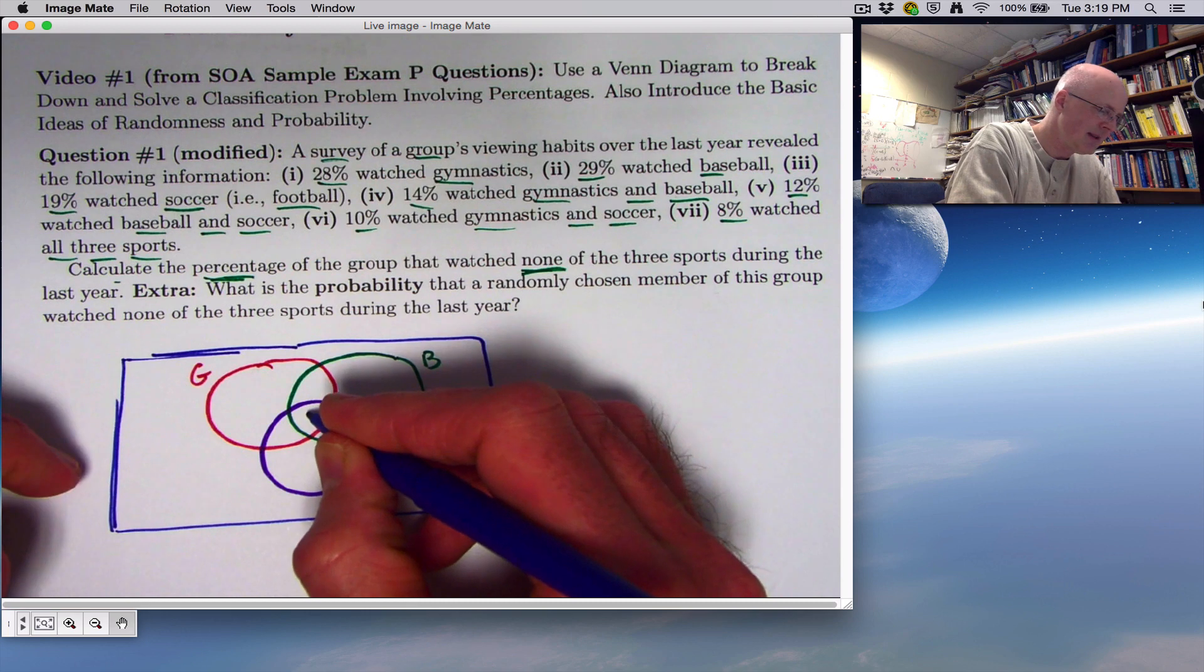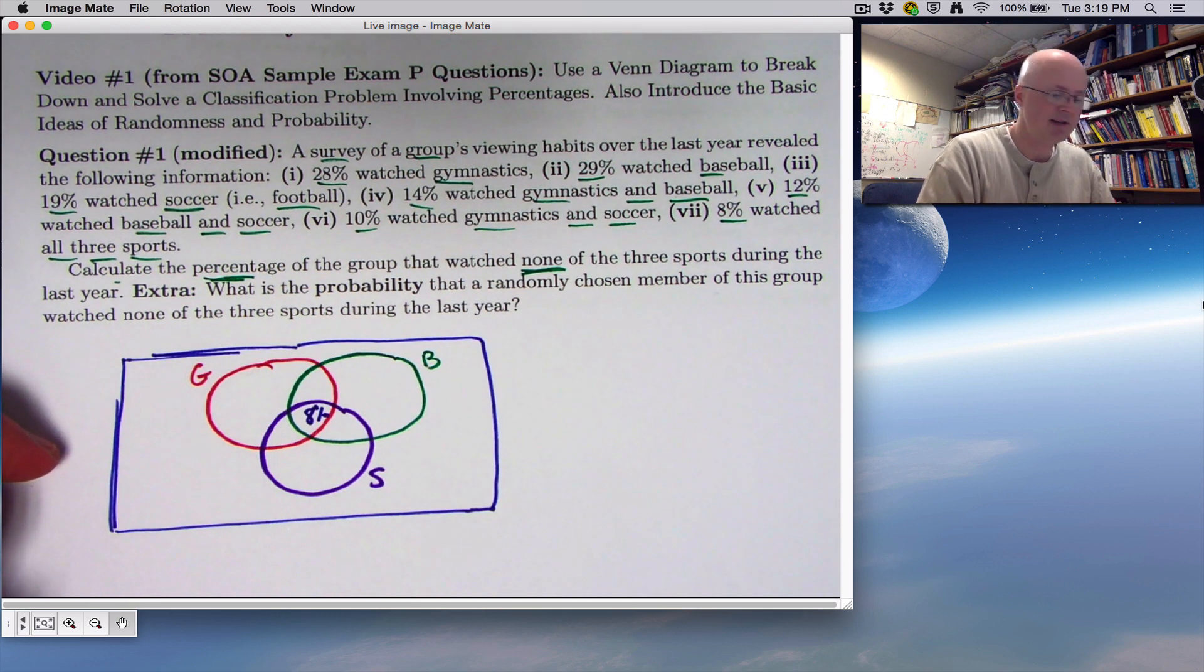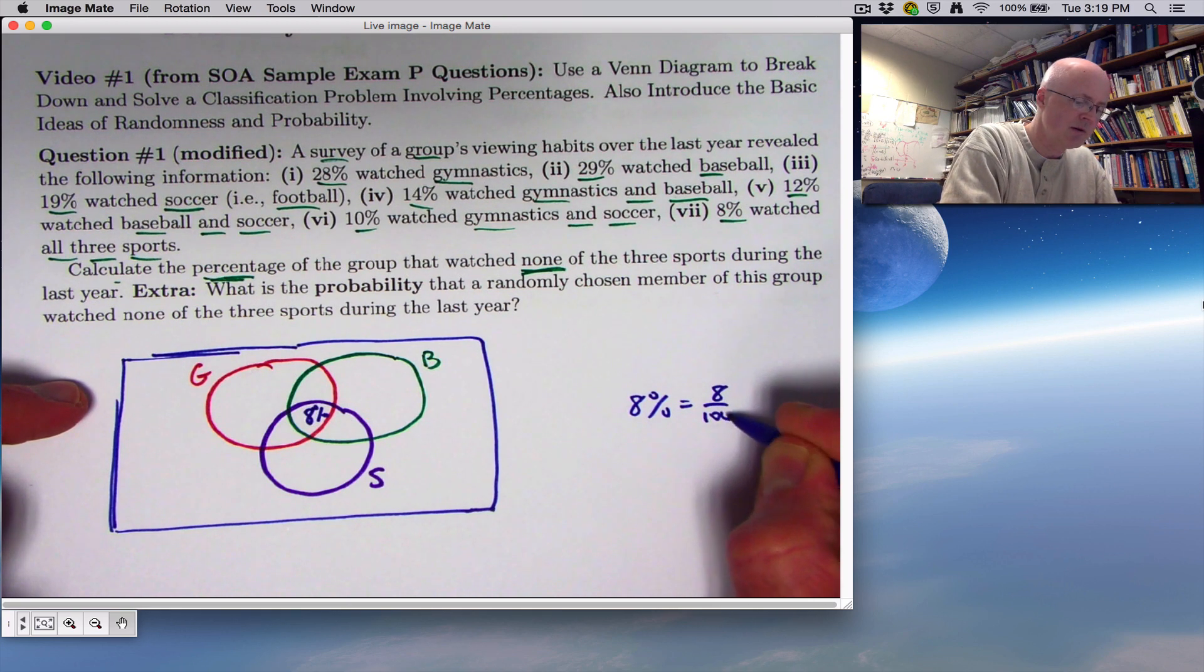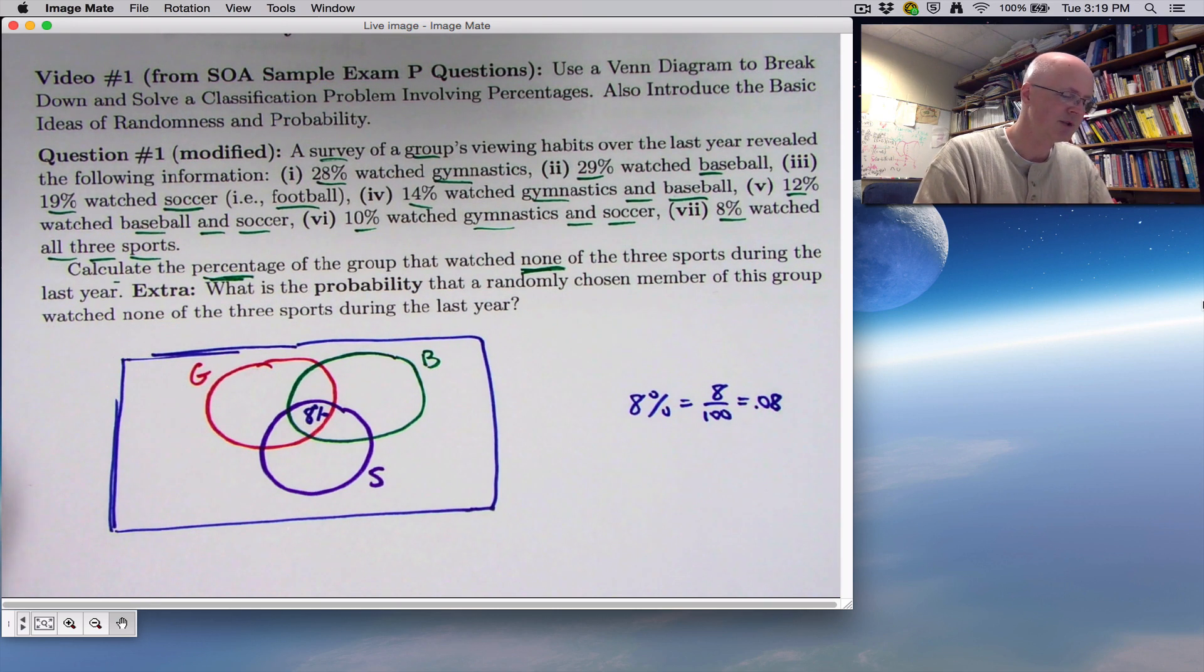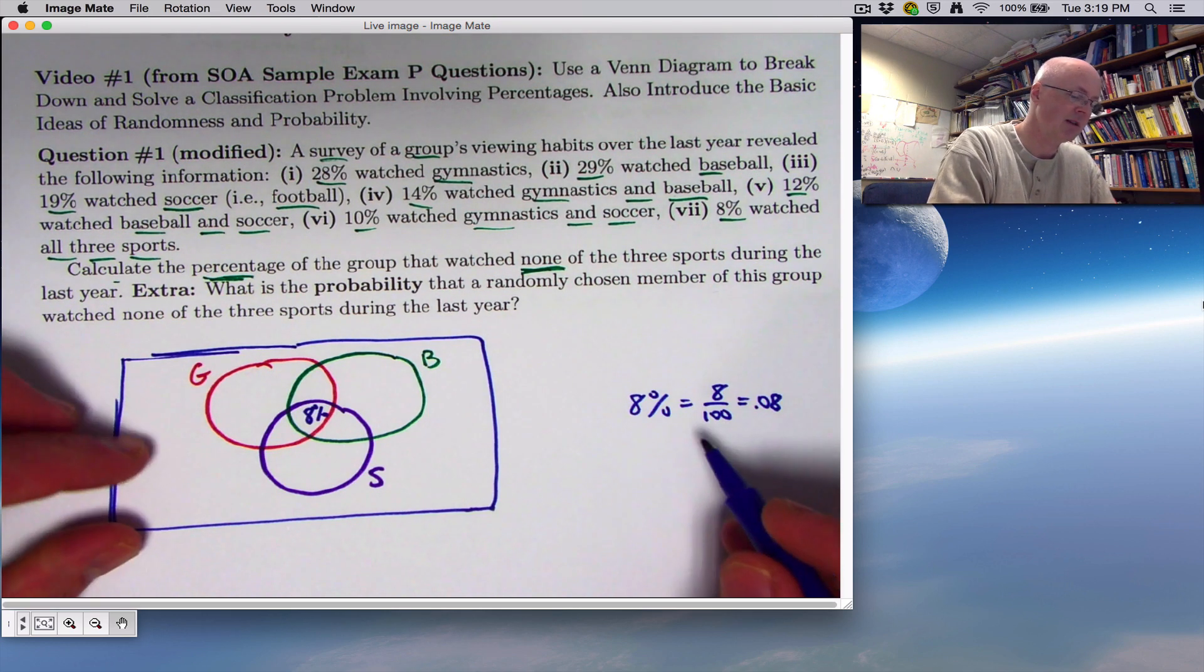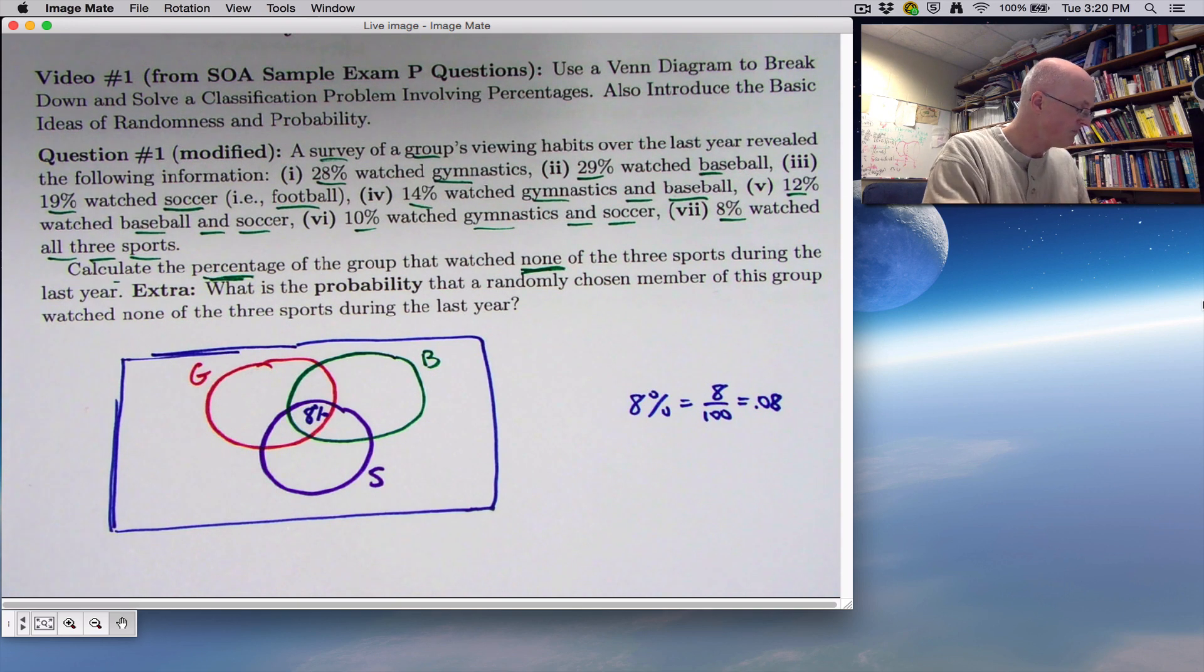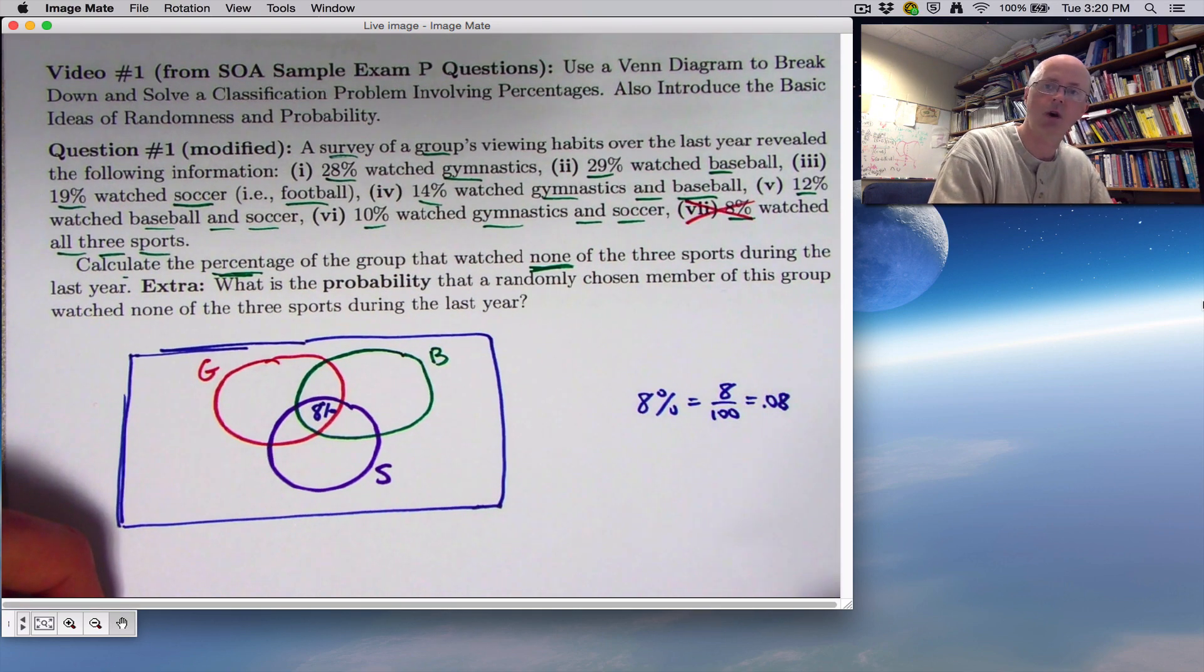Put an 8 inside all three circles. You can also put an 8% if you like or a .08, 8%. By definition, percent means 8 per 100, .08. So whenever you convert a percentage to a decimal like this, sometimes the teacher might have told you, well, just get rid of the percent sign and move the decimal to the left two places. That's true. You might have wondered why. The reason is percent means per 100. So 8% literally means 8 per 100. So we've taken care of the last piece of information.